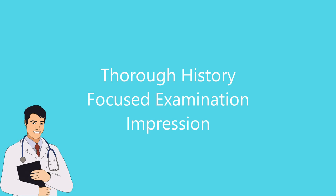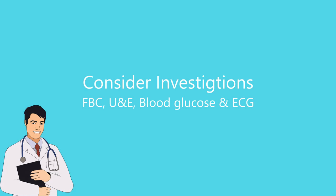Having taken a thorough history and performed a focused examination, the next step is to consider investigations that might help you. By this time, you may have a good idea as to what is the underlying cause of the dizziness. You'll request investigations to confirm your diagnosis or to rule out your differential diagnoses. Investigations include blood tests — full blood count, U&Es, blood glucose — and you might want to do an ECG, or even refer the patient to secondary care for further investigations.